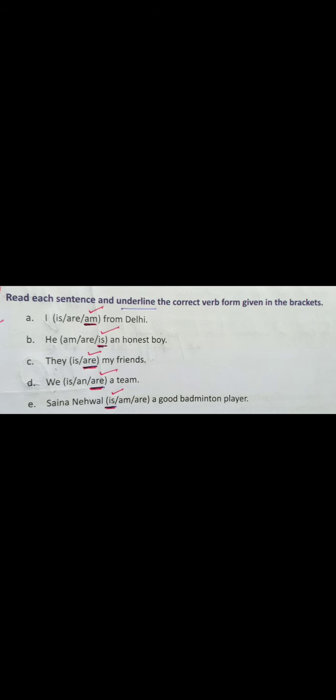Now, move on the exercise. First, I - we have three options in each sentence. I from Delhi. Options are is, are, am. It's very clear. We will always use am with I. I am from Delhi. Clear? Am is the correct verb form.